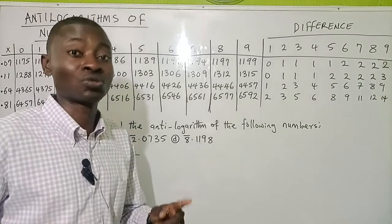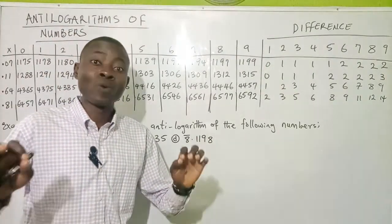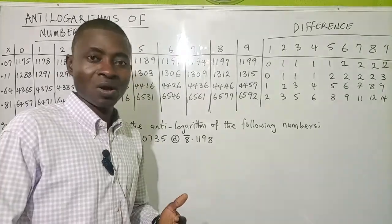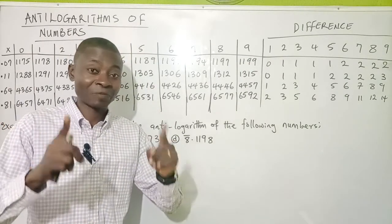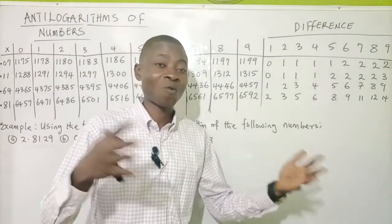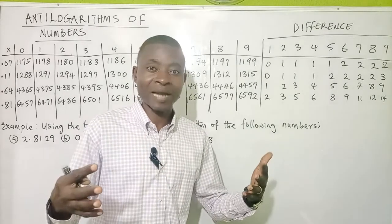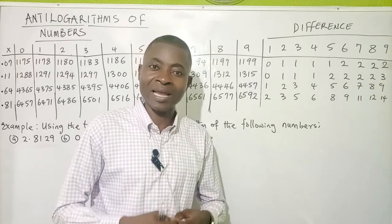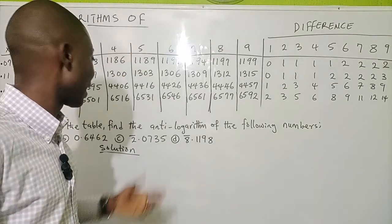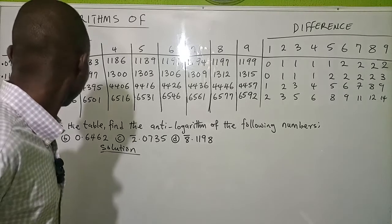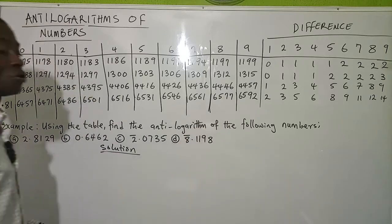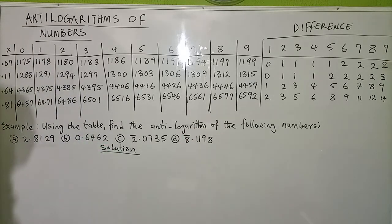It's very important for us to know how to find the antilog of numbers, because without being able to find the antilog you will not be able to get your final answer — especially when you are multiplying two different numbers, dividing two different numbers, or finding the square or square root of numbers under logarithm. To get your final answer you must have a good knowledge of how the antilog table works, and that's exactly what we'll be doing in this video. The question says: using the table, find the antilog readings of the following numbers.